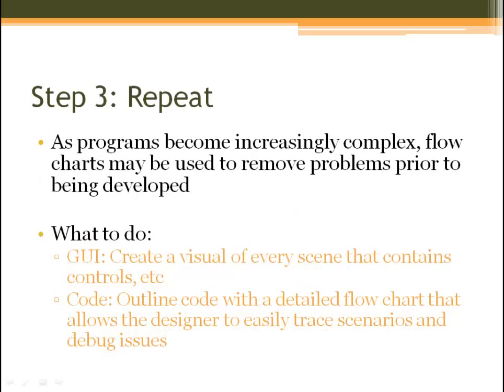Finally, Step 3: repeat this process until the entire program is outlined. As programs become increasingly complex, flowcharts may be used to remove problems prior to development. For the GUI, create a visual of every scene that contains controls — this is very similar to creating a storyboard, but for a program. For the code, outline it with a detailed flowchart that allows the designer to easily trace scenarios and debug issues.